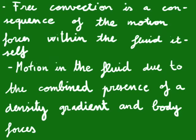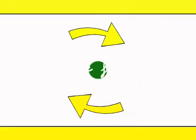Having a density gradient in a gravitational field doesn't secure the existence of free convection currents. Let's imagine two horizontal plates containing fluids at different temperatures.